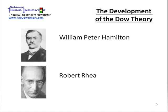Charles Dow died before he could complete the description of his theory — he never actually named it and never wrote a book on it. His successor at the Wall Street Journal, William Peter Hamilton, editorialized on Dow's thoughts and did write a book, The Stock Market Barometer, in 1922. Hamilton's most famous editorial was 'A Turn in the Tide,' published in 1929. In the early 1930s, an investor named Robert Rhea, who was disabled and bedridden, had the time and inclination to analyze the work of Dow and Hamilton and codify what we now know as the Dow Theory.